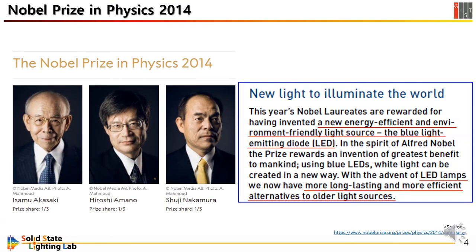As already mentioned, after the blue LED and the white LED had been developed, their efficiency improved a lot. Efficiency became greater than the conventional illumination system. The world has witnessed that blue LED is a new energy-efficient and environment-friendly light source, and white LED lamps are a more long-lasting and more efficient alternative to all the light sources.